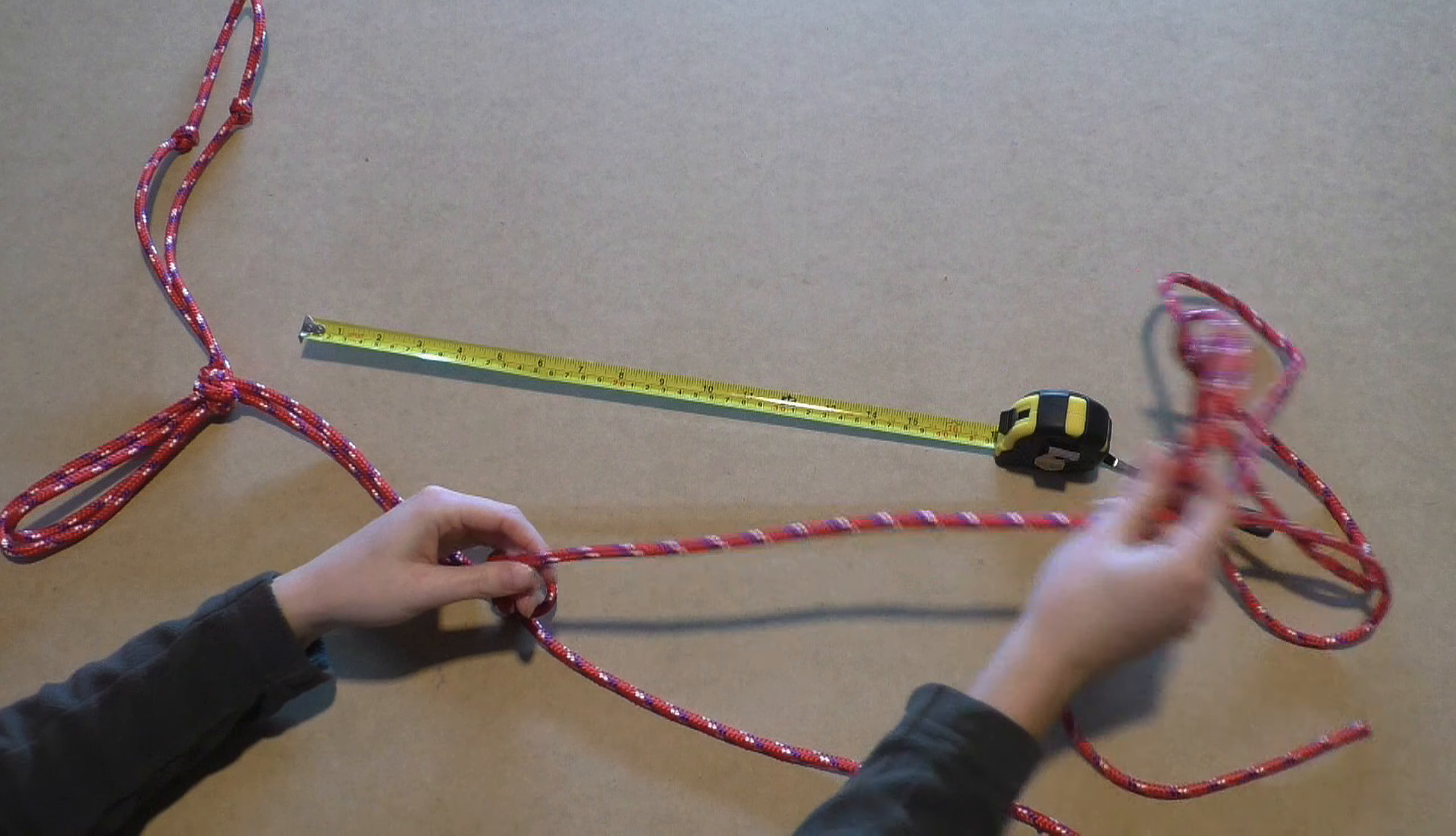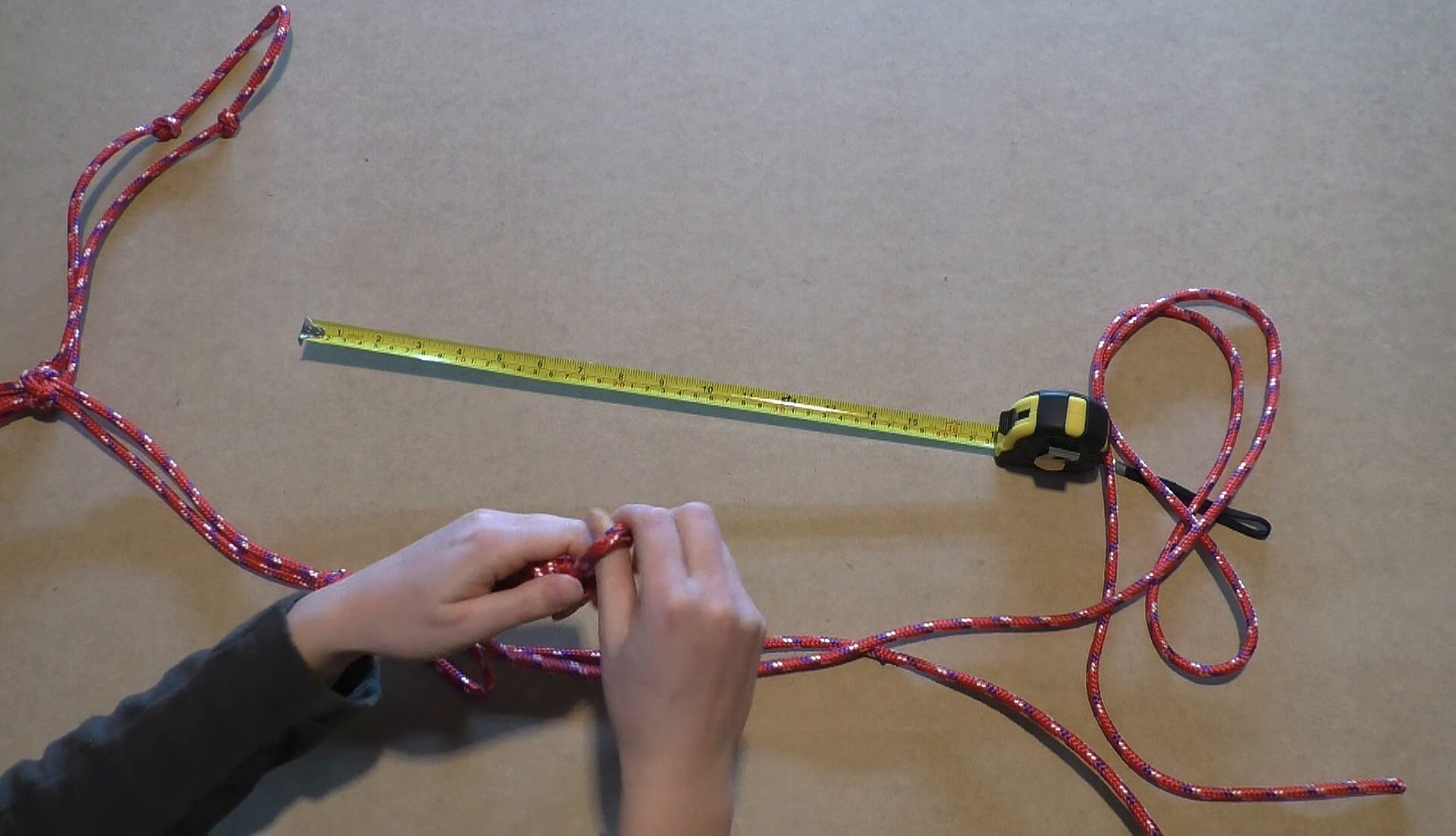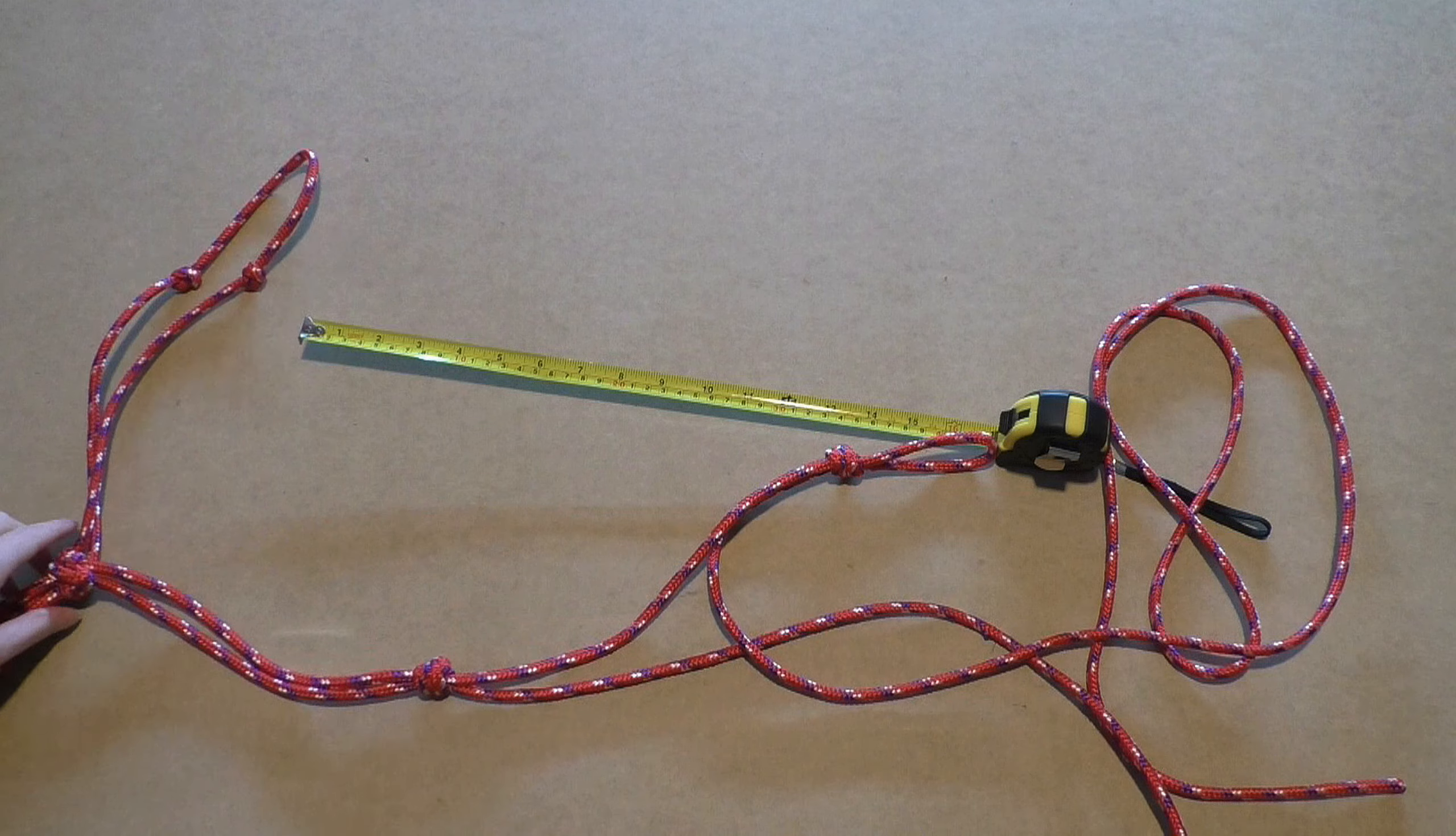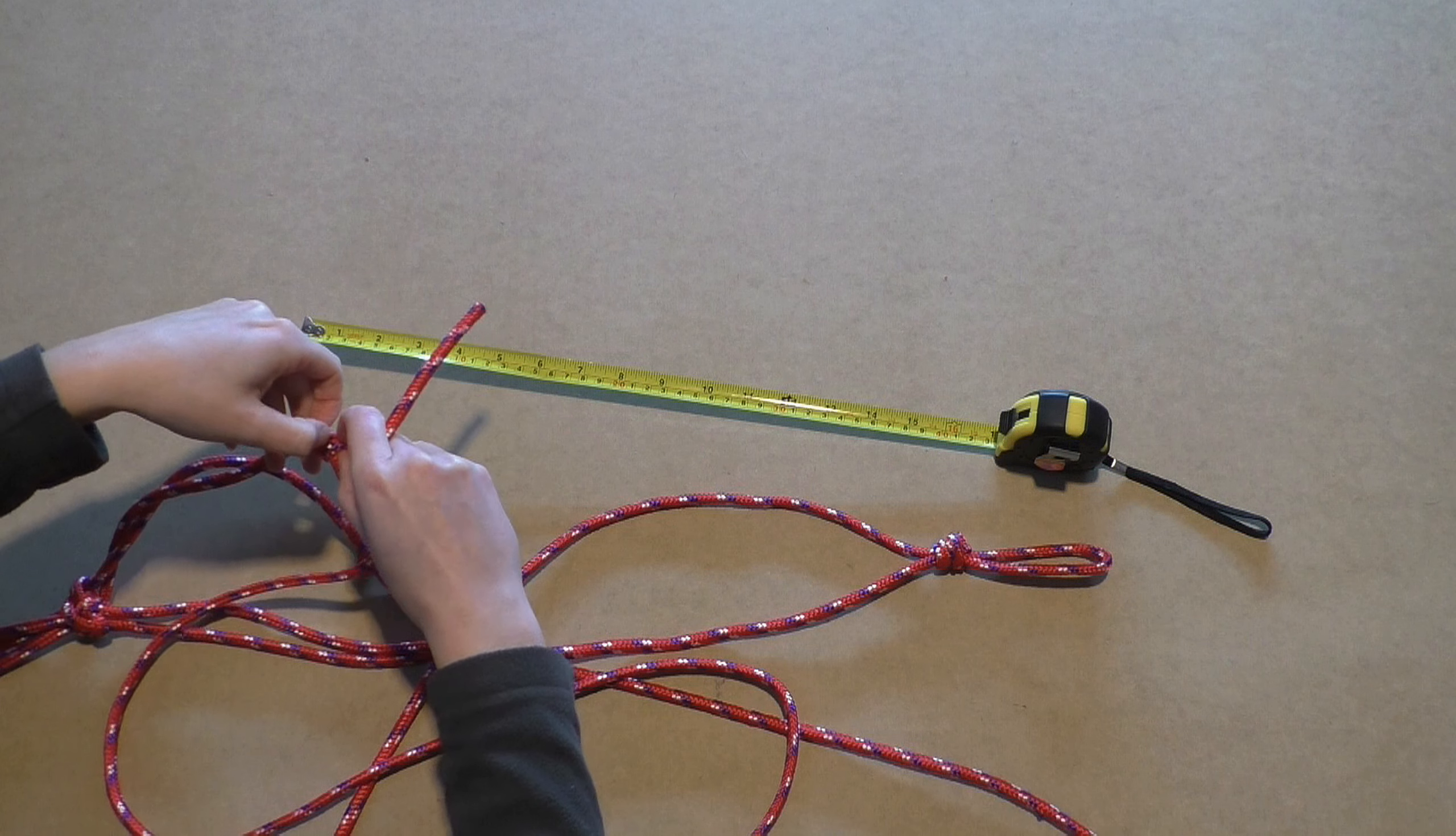Take the longer end and make an overhand loop at 25cm. Make sure the loose end will be at the left side of the loop. Grab the noseband and loosen up the left overhand knot. Feed the long, loose end of the rope through this knot, just following its track. Make sure the distance from the overhand loop to the overhand knot will be around 25cm.